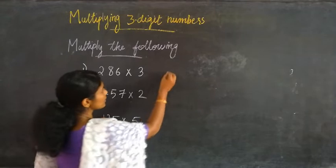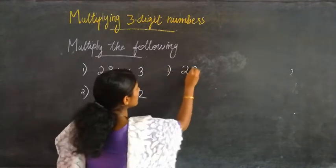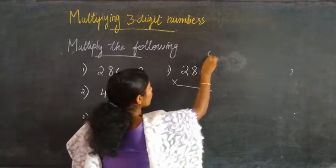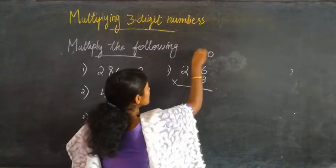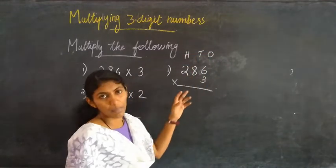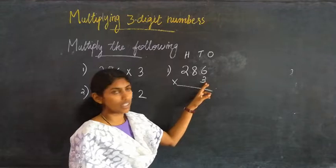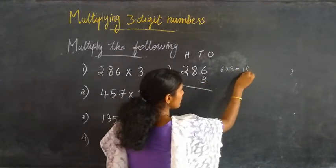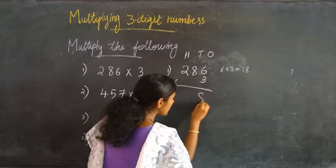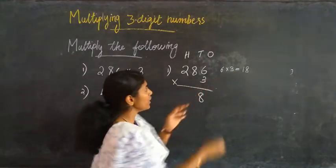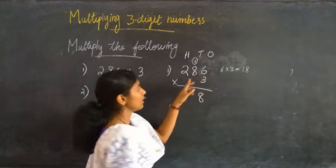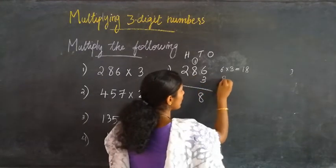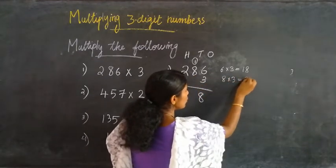For the first one, 286 into 3 — here we have ones, tens, and hundreds. First we have to multiply the ones by 3. That is 6 into 3 equal to 18. Writing 8 here and this 1 ten is carried over. Then 8 into 3.